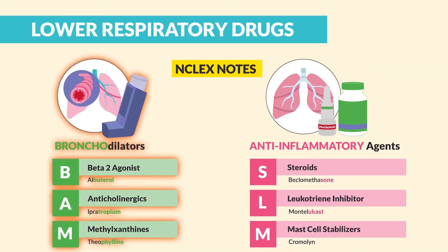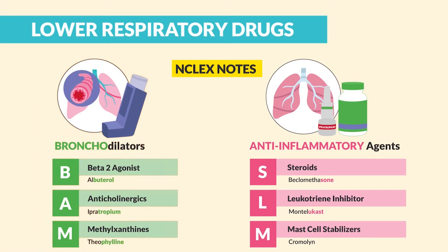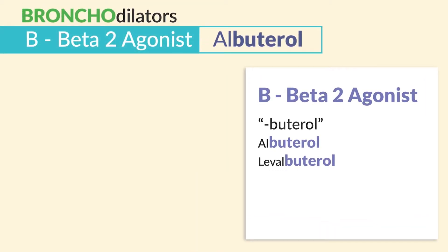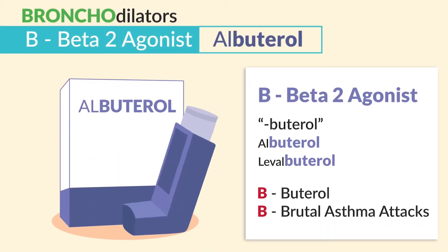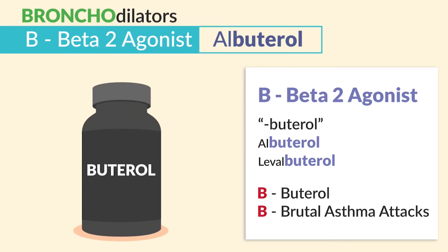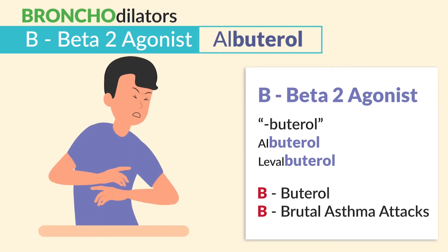Alright guys, let's begin. Let's start with our Bronco team, BAM. First off, we have B for beta-2 agonists. These guys end in butyrol, like albuterol and levalbuterol. Just remember the B in butyrol is used for brutal asthma attacks.